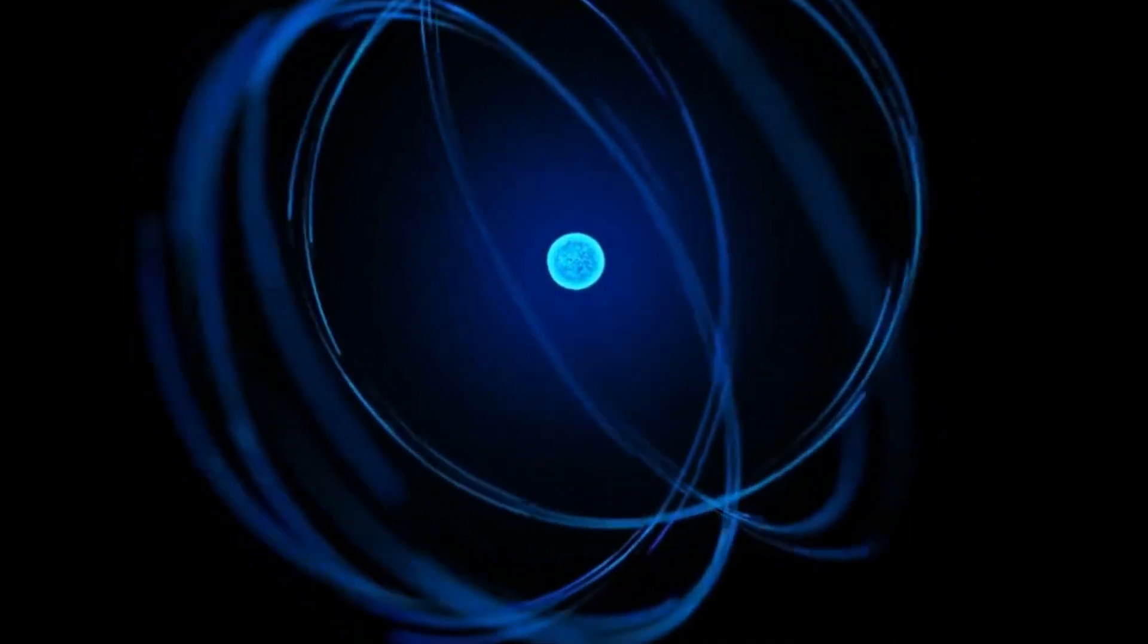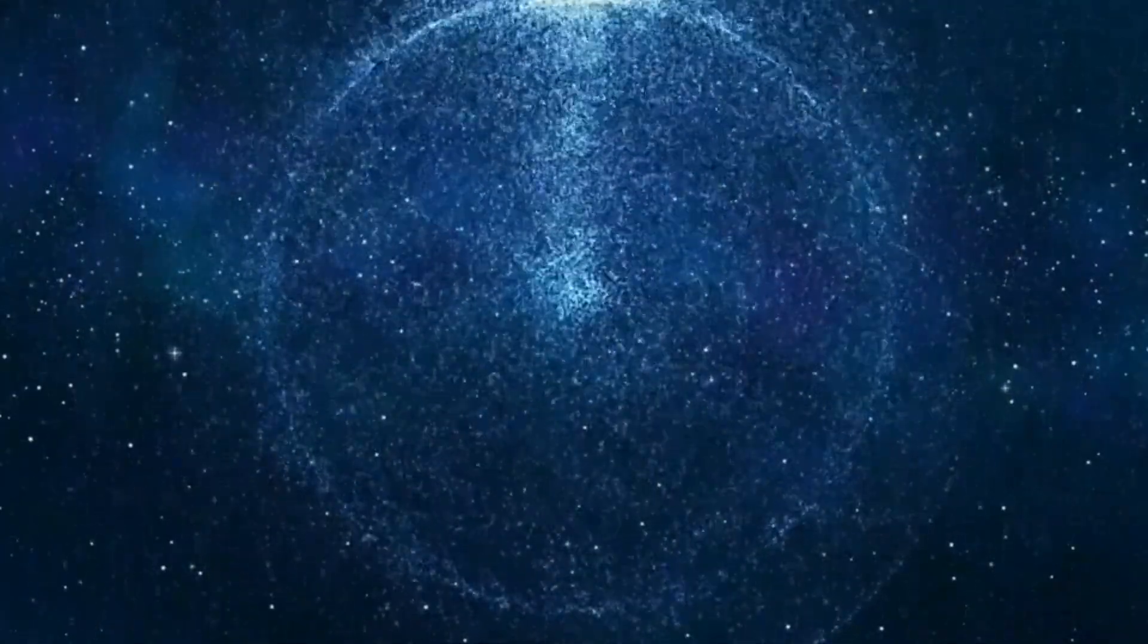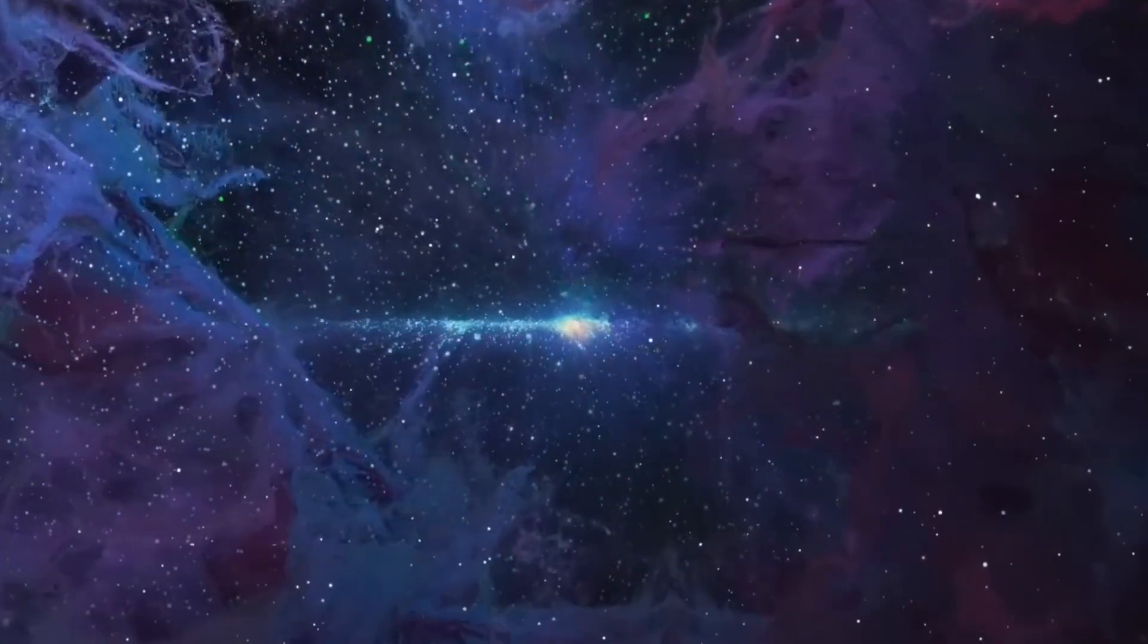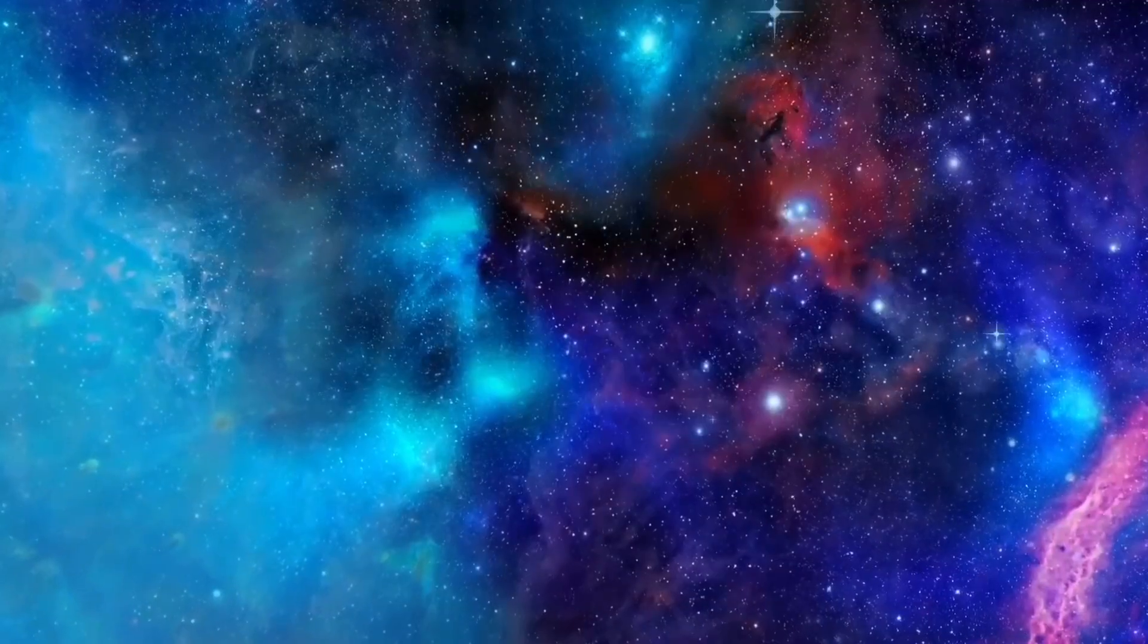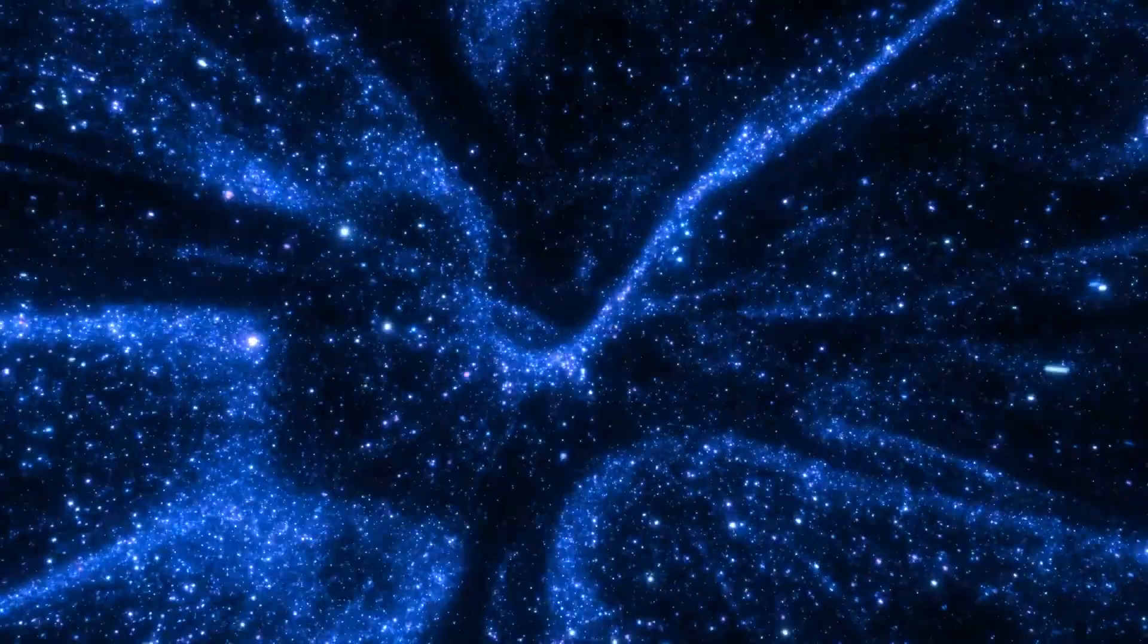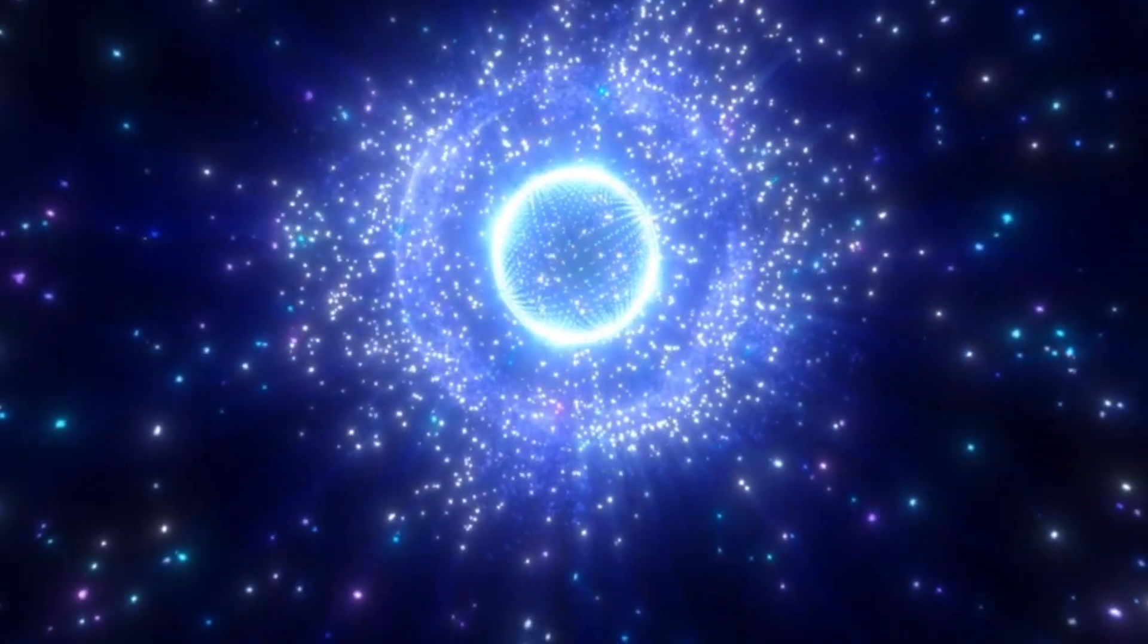This spin gives particles an orientation in space. When we measure a particle's spin, we can only do so in a specific direction, such as up or down, relative to the chosen direction of measurement. Interestingly, the result of this measurement can only be one of two possible outcomes. Either the particle's spin is aligned with the direction of measurement, which we call spin up, or it's the opposite to that direction, which we call spin down.